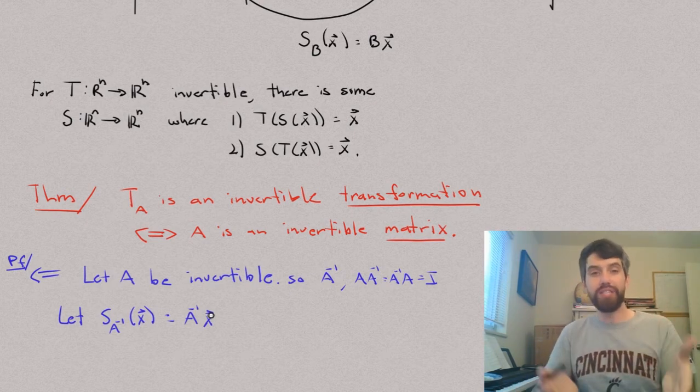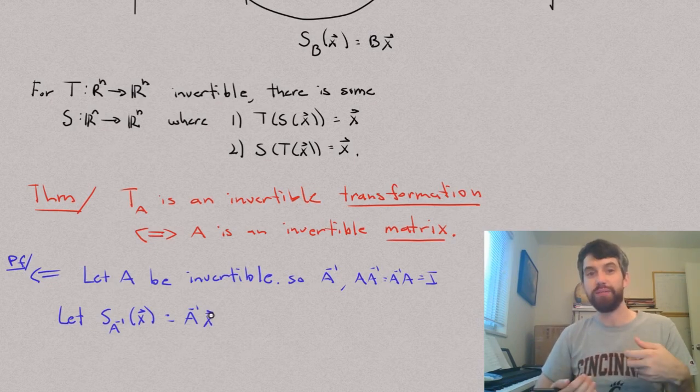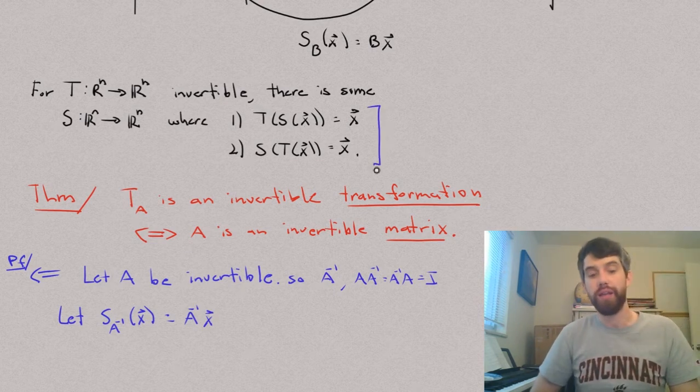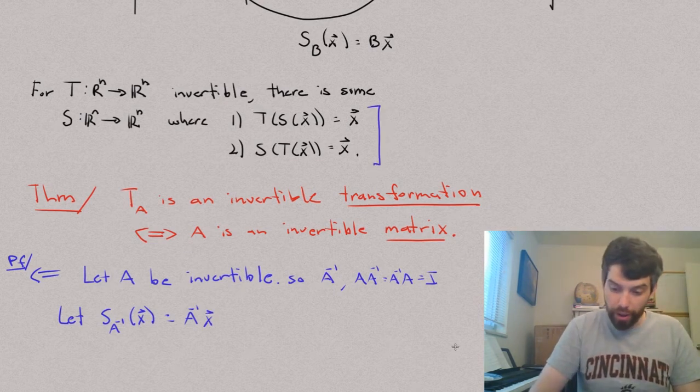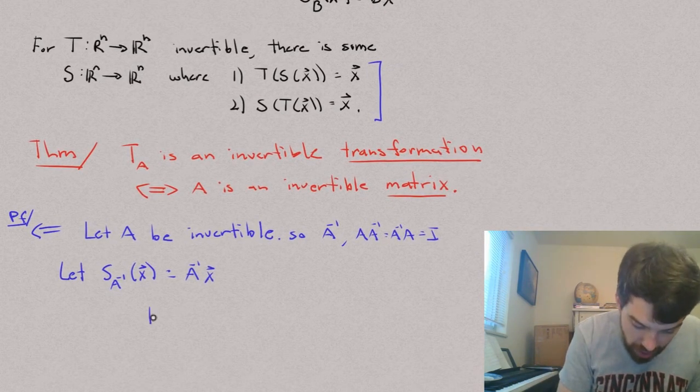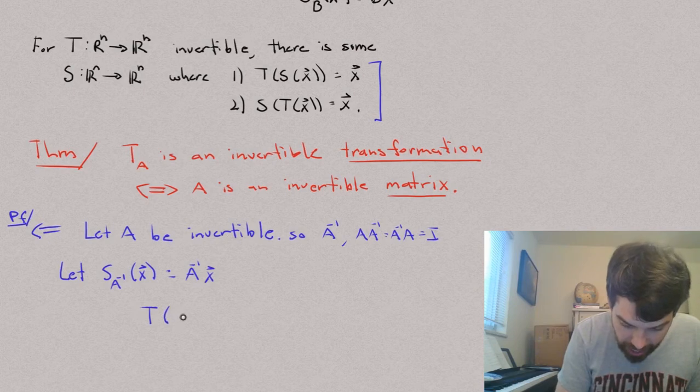So, now let's see whether this S, whether this transformation I've defined satisfies the property that I want. I need to satisfy the two properties that I have over here, 1 and 2. Well, if I go and try composing them, so let me go and take T of S of the vector X.